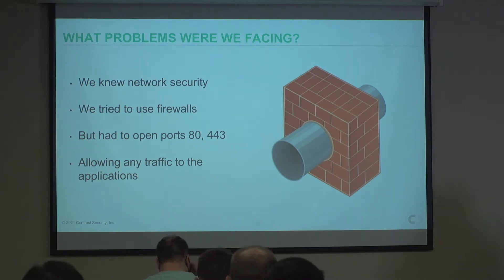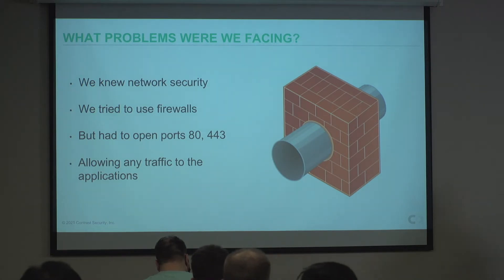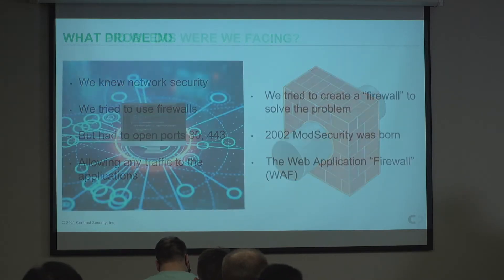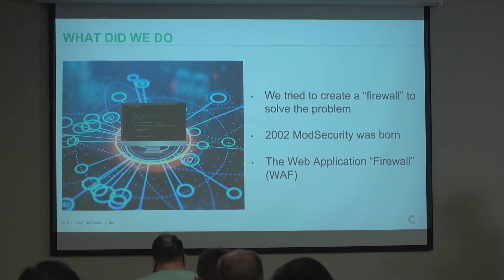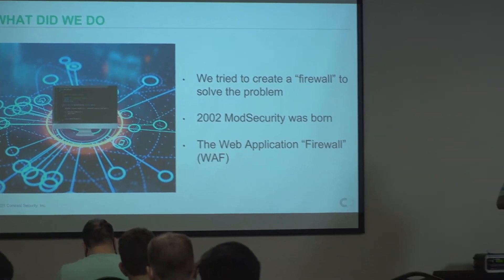Mod Security was born to tackle some of the problems of app sec, which really leads into where RASP is. What the WAF does is inspect traffic kind of like a stateful firewall would, but at Layer 7. We said 'we're good at firewalls, let's create another one.' Mod Security came along and is still in use today — Azure, AWS, all of them use components of it in their firewalls. It's really served its purpose, but it's not perfect.